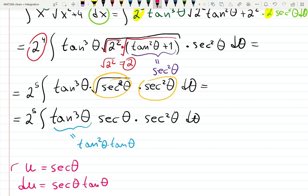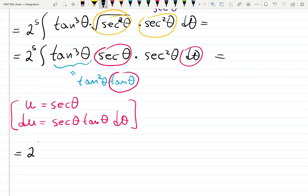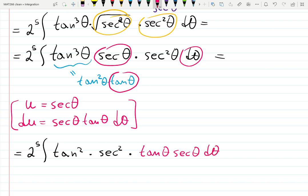Taking one single tangent and one single secant, don't forget d theta, gives us du. So tangent cubed becomes tangent squared, and secant cubed becomes secant squared. Each gives me one secant and one tangent — that tail of secant theta and tangent theta d theta is exactly du. This is the case where du comes first and indicates what u should be: u equals secant theta.